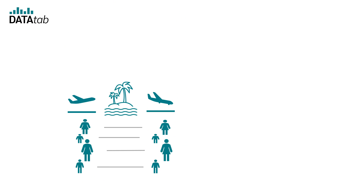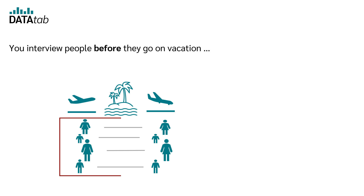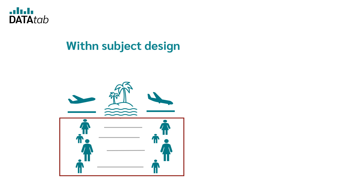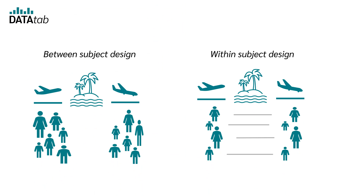The second, and in this case better design would be: you interview people before they go on vacation and then interview the same people after their vacation. In this case, you would have a within-subject design. The measured values are always available in pairs, and the same subject is exposed to both levels of the factor.